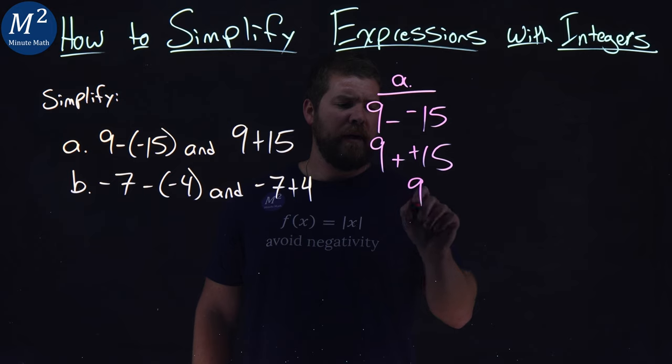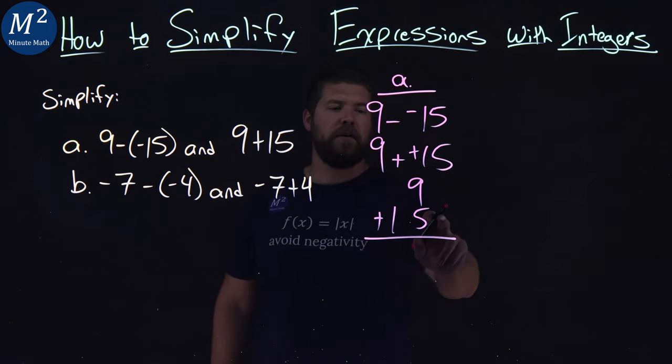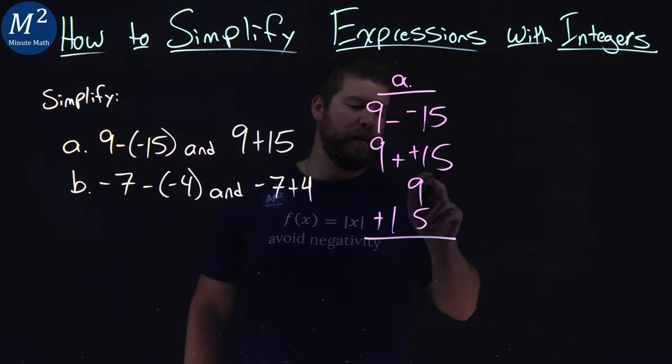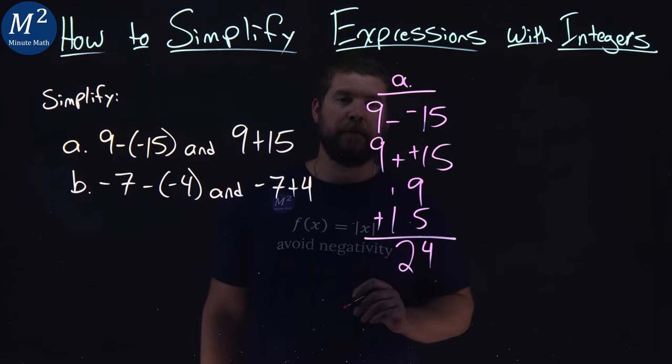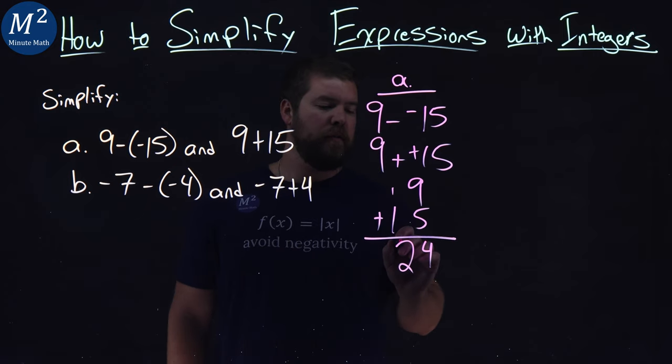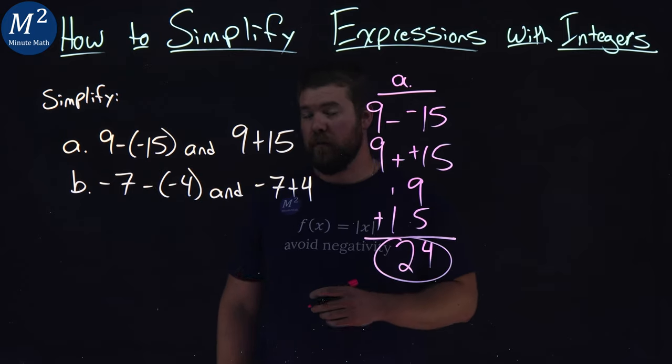So now I just want to add 9 and 15 together. 15 plus 9, or 9 plus 5 is 4, carry the 1, and we have 24 here. And so 9 plus 15 is the same thing as 9 minus a negative 15, that's 24.